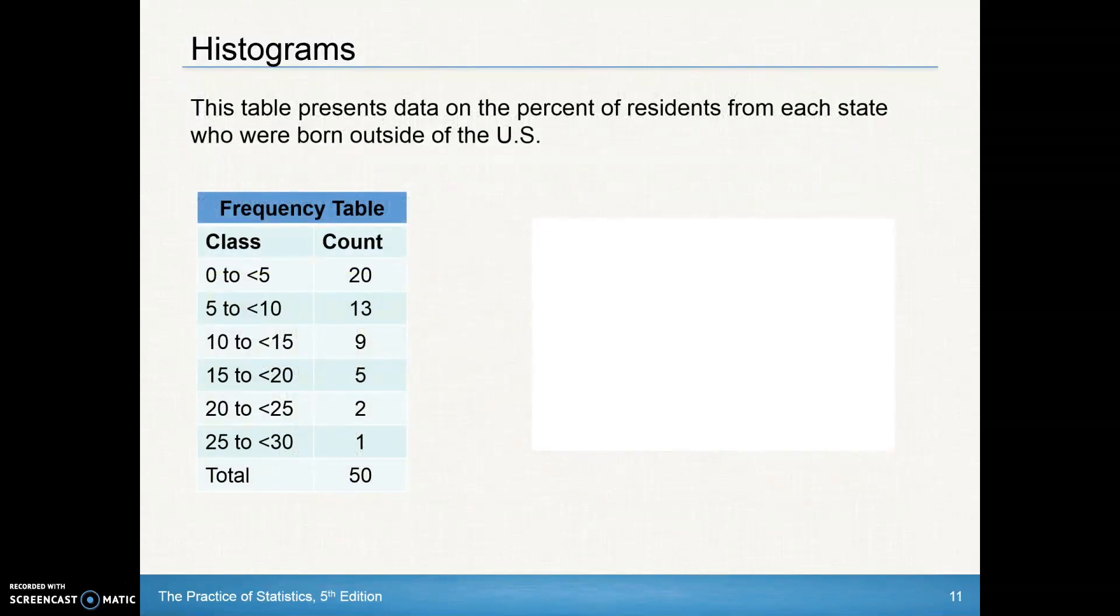So let's take a look at how we might do this. This data here is on the percent of residents from each state who are born outside of the U.S. Somebody's already divided these classes up. We have a class from 0 to 5, 5 to 10.